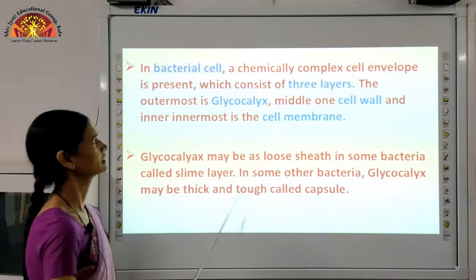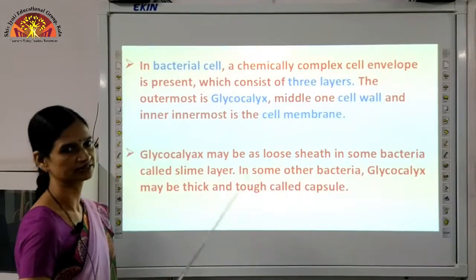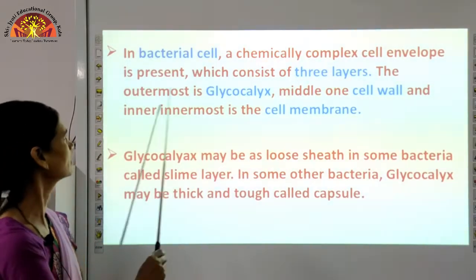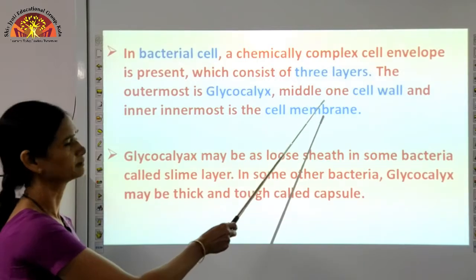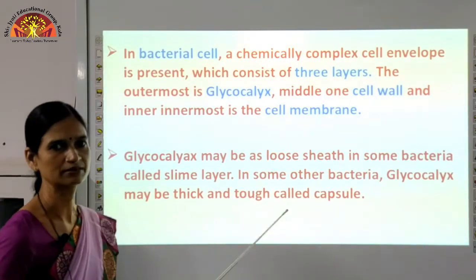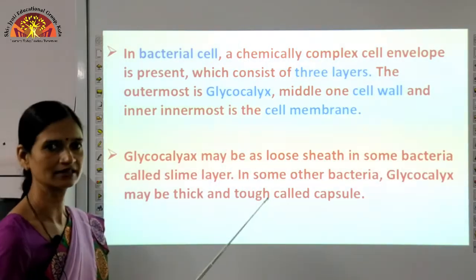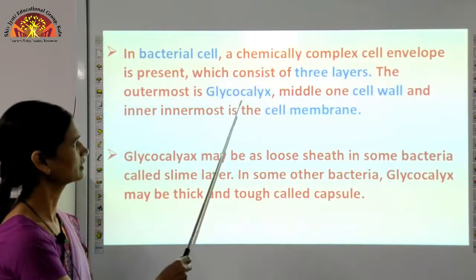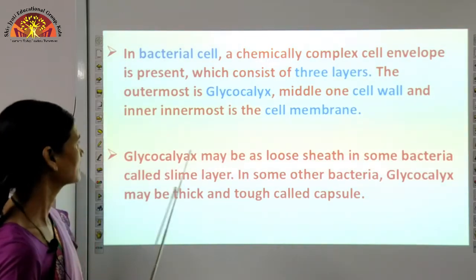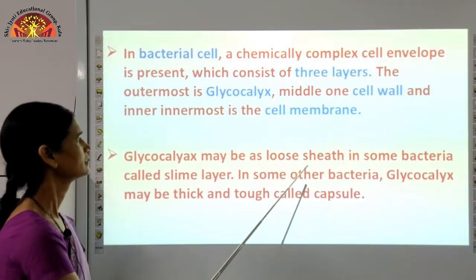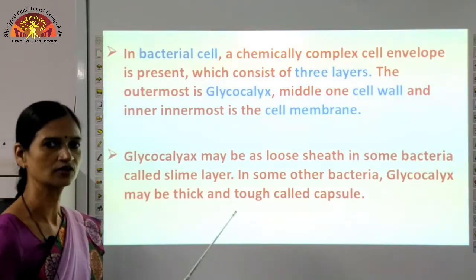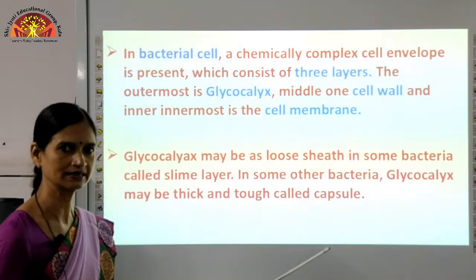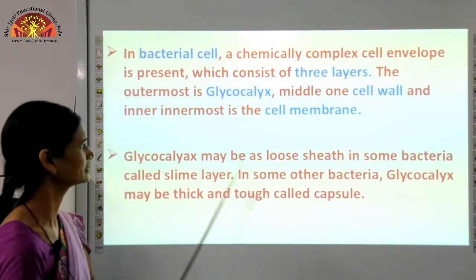In bacterial cells, a chemically complex envelope is present for protection, made up of three layers. The outermost is glycocalyx, the second middle one is cell wall, and the innermost is cell membrane. Glycocalyx may be loose — called a slime layer in some bacteria. If glycocalyx is thick, we call it a capsule, which is present for protection.